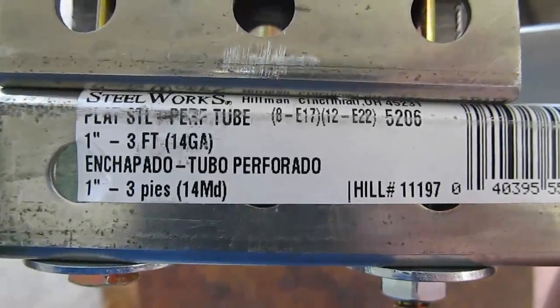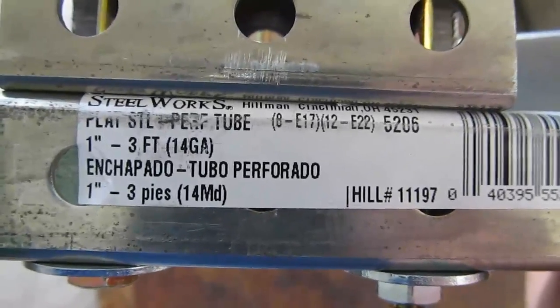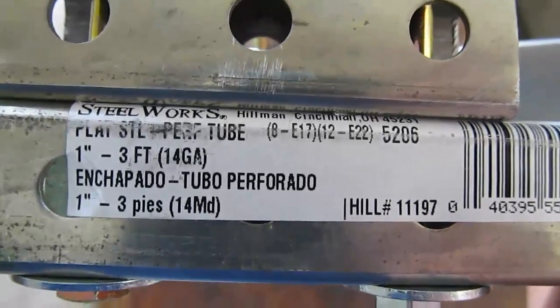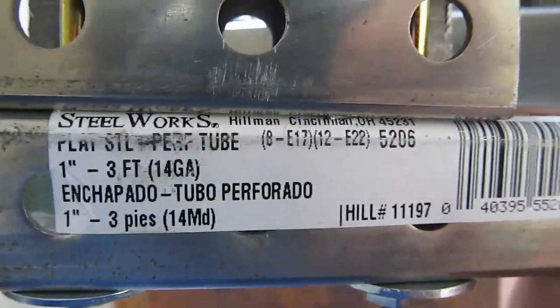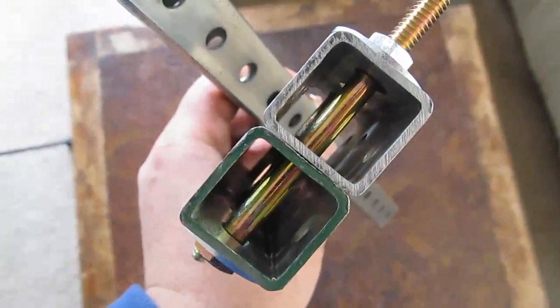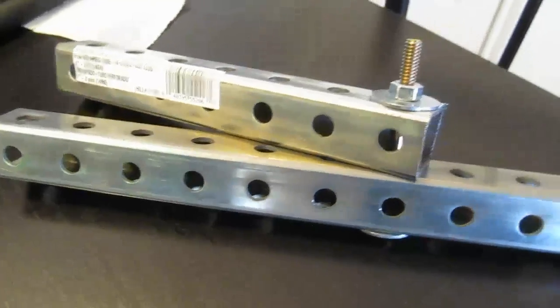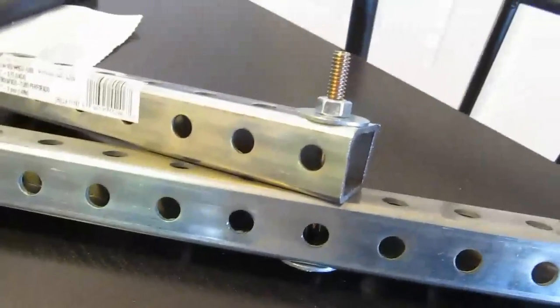Here are the details on the one inch steel square tubing. 14 gauge. It's made by Hillman. And here's what it looks like on the end. I'm trial fitting the hardware, and it looks like it's going to work just fine.